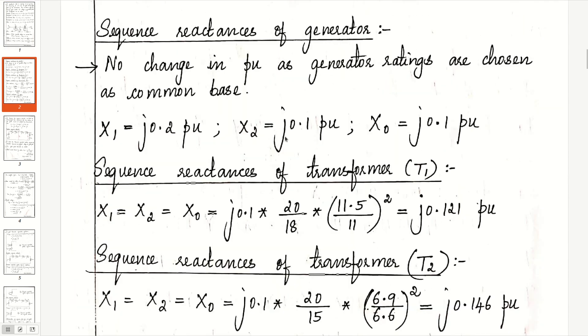Since the generator rating is chosen as the common base, there will not be any change in the per unit value of the reactances of the generator. So X1, X2, and X0 will be the same as the old values.